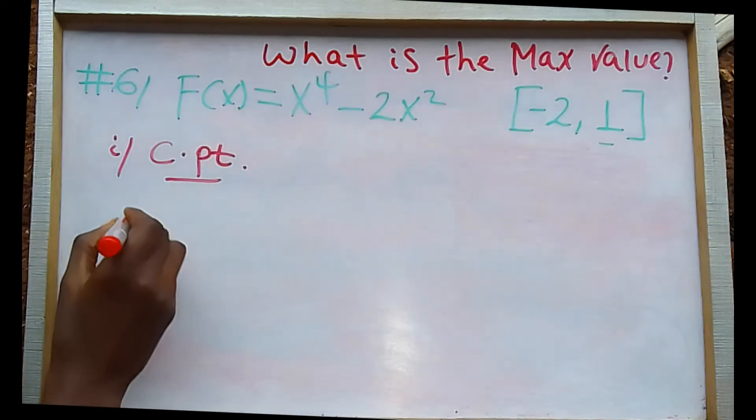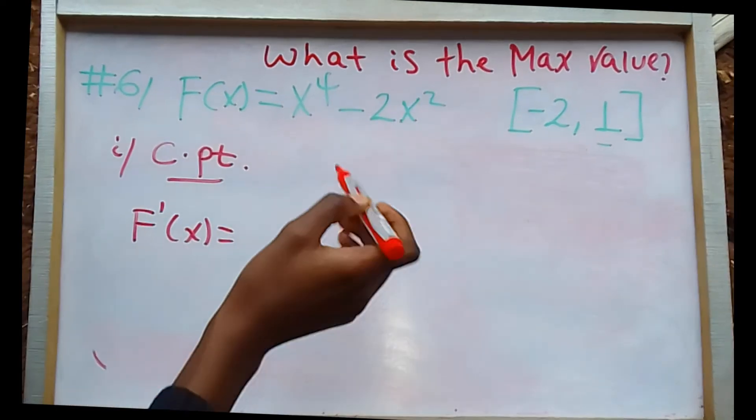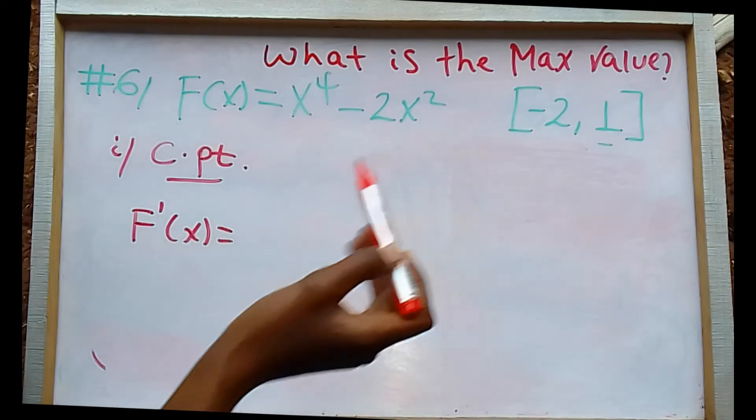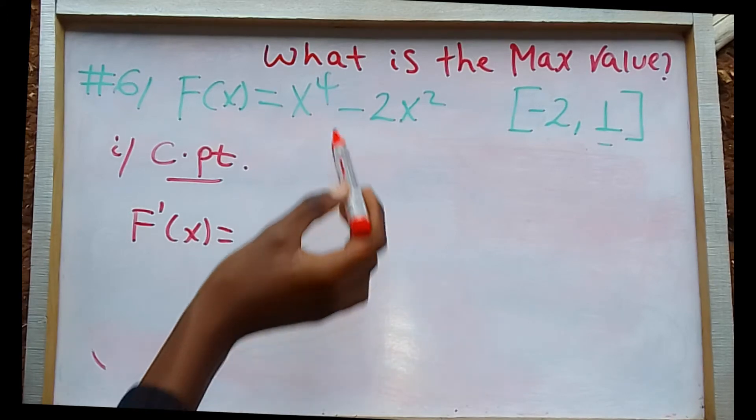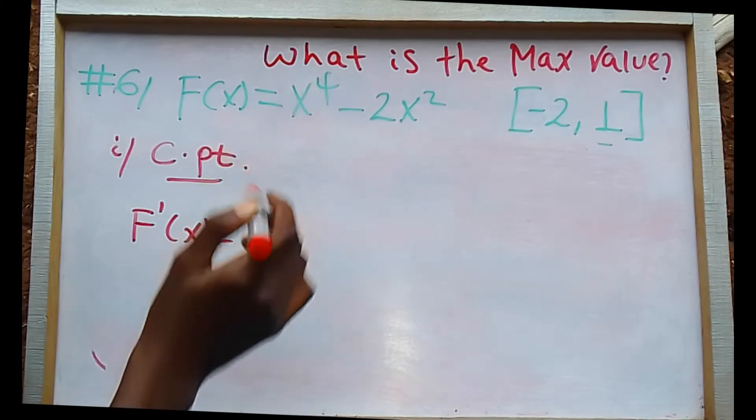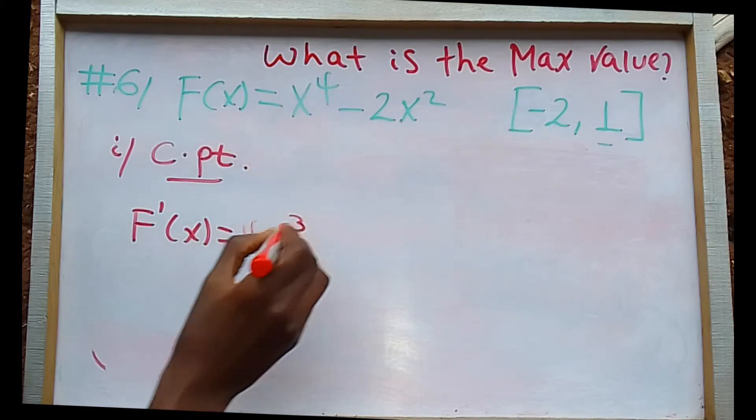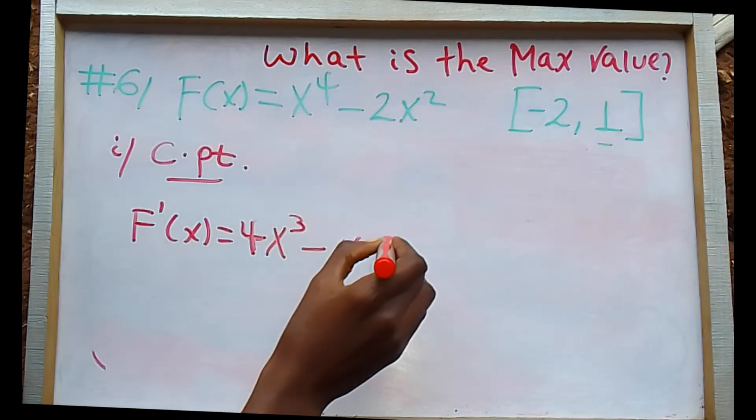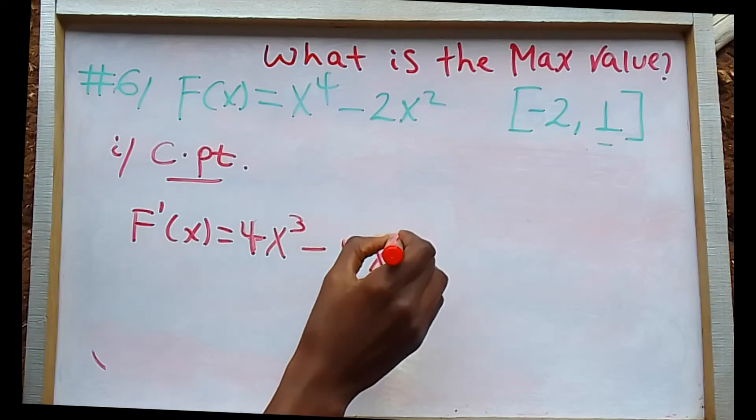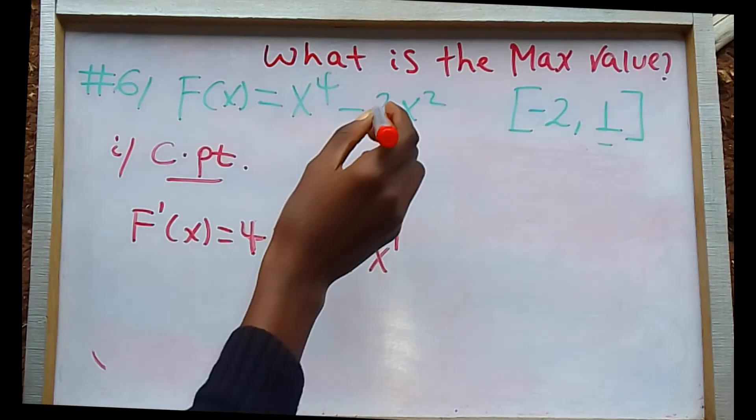F prime of x: using the power rule, 4x to the power of 3 minus 2 times 2, which is 4x to the power of 1.